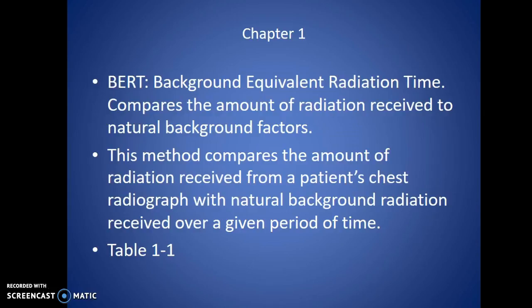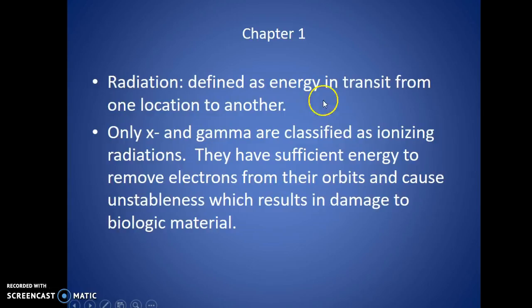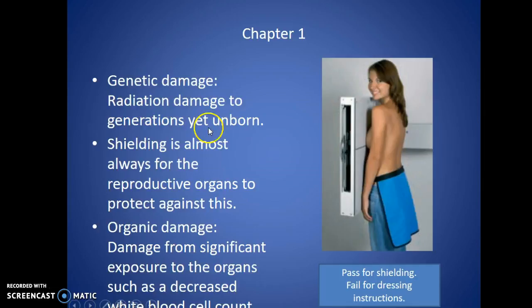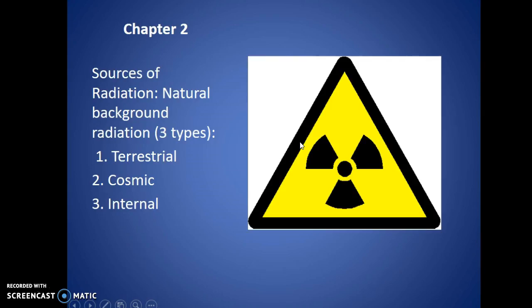Radiation is defined as energy in transit from one location to another. Only x-rays and gamma rays are classified as ionizing radiations — these two have enough power to remove electrons from their orbits. Genetic damage is radiation damage to generations yet unborn — to the ova and sperm — and shielding is almost always the most effective means to protect against this. Organic damage involves significant exposure to organs, such as a decreased white blood cell count, which could indicate leukemia.